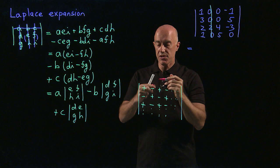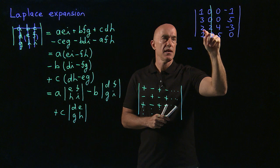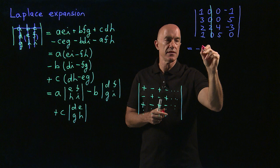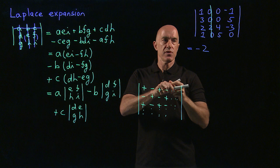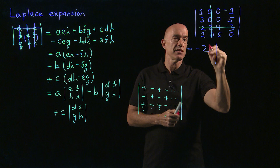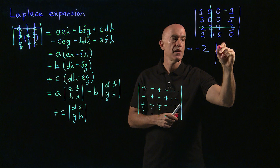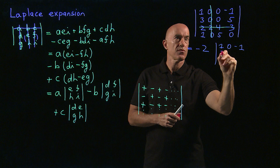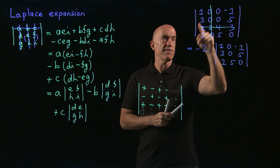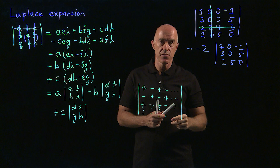We have one non-zero term in the second column, so we need to know its sign. Using the checkerboard pattern starting from the top — plus, minus, plus, minus — that term gets a minus sign, and the factor is 2. We delete that row and that column, leaving a 3×3 matrix: [1, 0, −1; 3, 0, 5; 1, 5, 0]. So we've reduced the 4×4 determinant to one number times a 3×3 determinant.